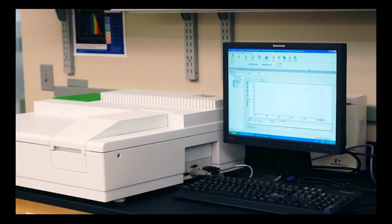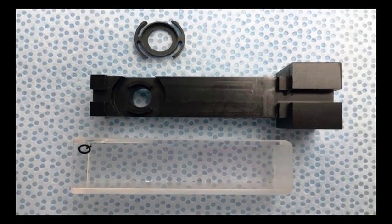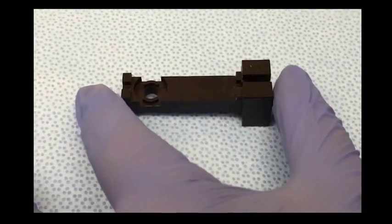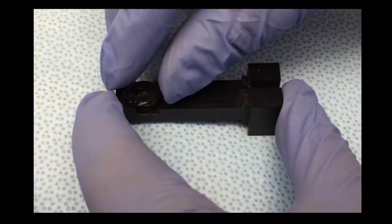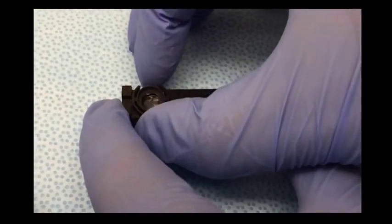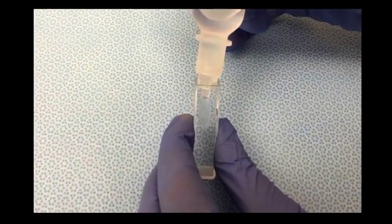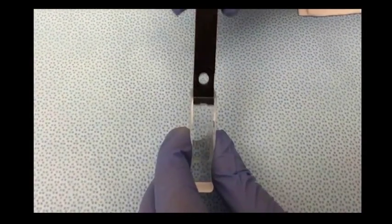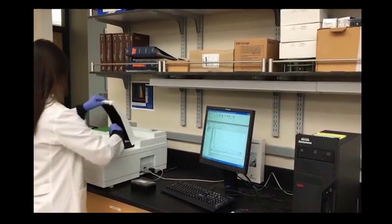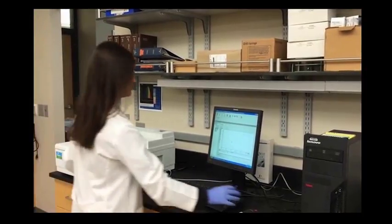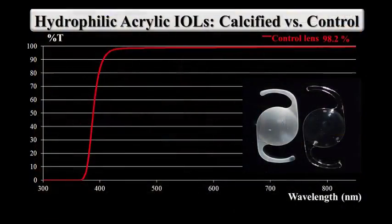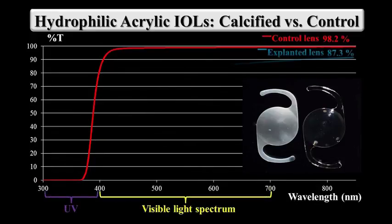A spectrophotometer is used to measure light transmittance. The IOL is fitted to a plastic insert with an aperture for the optic, and this is placed inside a cuvette filled with BSS, which is then placed inside of the device. Mean light transmittance may be decreased by up to 11% in opacified explanted lenses.